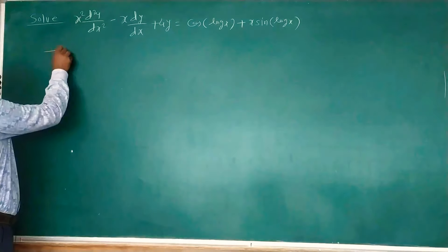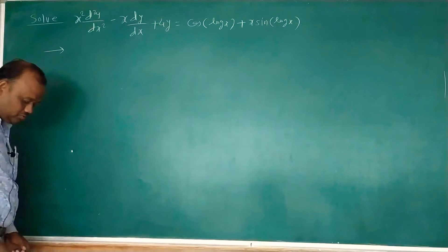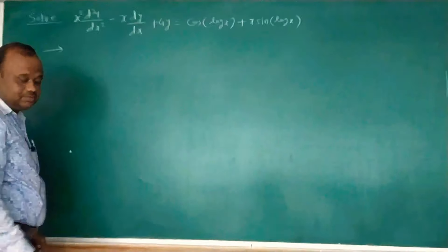In the last video we already saw how to solve such types of problems. This is not a linear differential equation with constant coefficients. First we have to reduce this Cauchy's linear differential equation to a linear differential equation with constant coefficients, and then we can write its solution as CF plus PI.